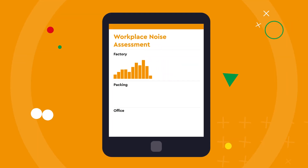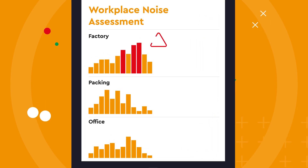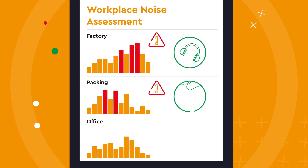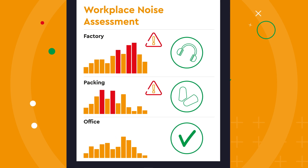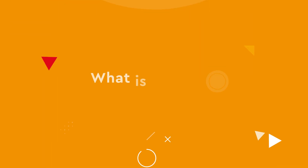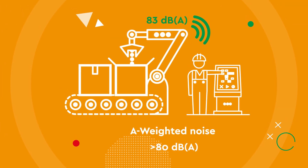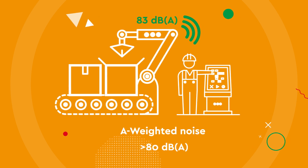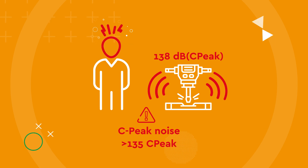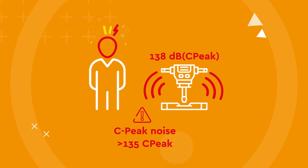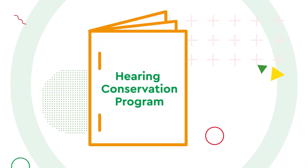Using the noise level data collected, each work area can then be classified as either requiring hearing protection to be worn, or hearing protection provided and worn voluntarily, or no hearing protection controls are needed at all. The noise levels at which controls should be put in place by law are greater than 80 decibels for A-average noise, or greater than 135 decibels for C-peak noise. Above these levels, you are required to implement a hearing conservation program.